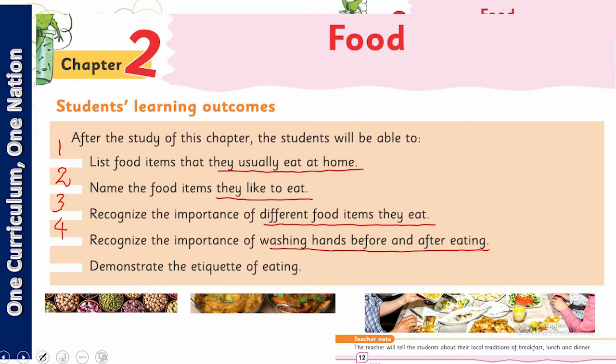SLO number four: recognize the importance of washing hands before and after meals. And SLO number five is very interesting — demonstrate the etiquettes of eating. These are our five SLOs and we have to cover all of them in this lesson.